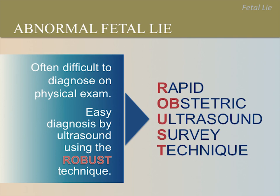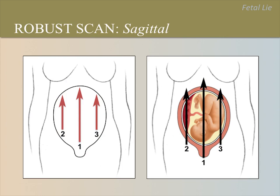Using ultrasound, we can determine the fetal lie easily using the robust technique, which was described in an earlier lesson. To start a robust scan, take three sagittal scans from the symphysis pubis, which is low on the abdomen, to the upper abdomen. The first scan is in the midline, the second to the mother's right of midline, and the third to the mother's left of midline. Next, take three transverse scans scanning from the maternal right to the left.